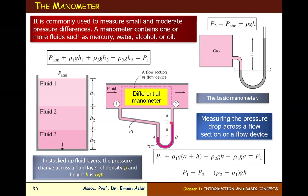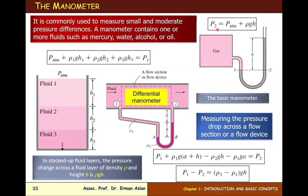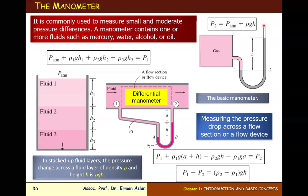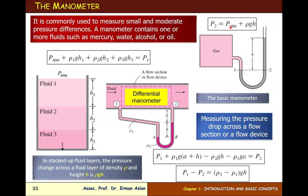For the basic manometer with gas: pressure P1 and pressure P2 at the same level are equal. Pressure P2 = P_atm plus density times gravitational acceleration times height, since the tube is open to atmospheric pressure.